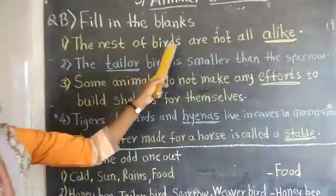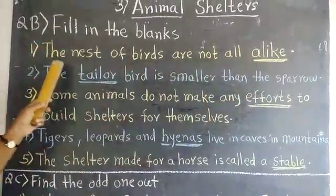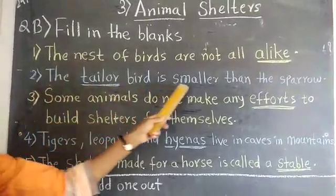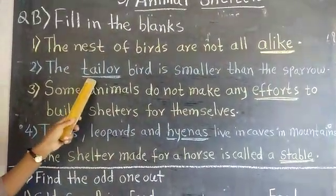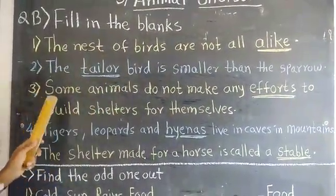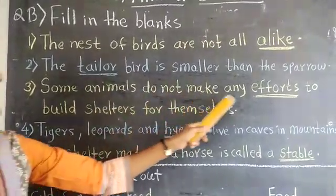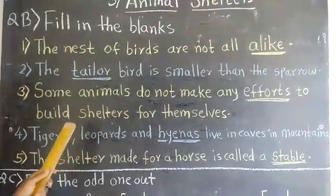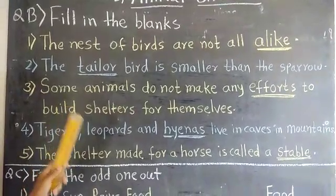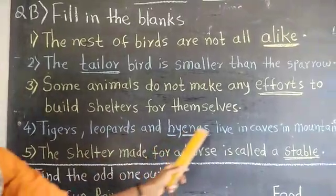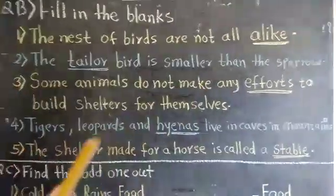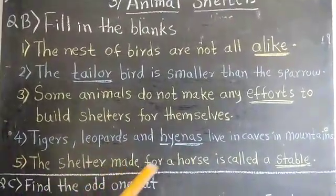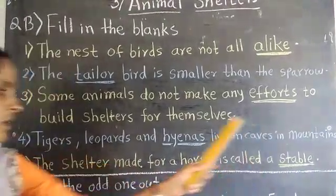The nests of birds are not all alike. The tailor bird is smaller than the sparrow. Some animals do not make any efforts to build shelters or dens. The tiger, leopards, and hyenas live in caves in mountains. The shelter made for a horse is called a stable.